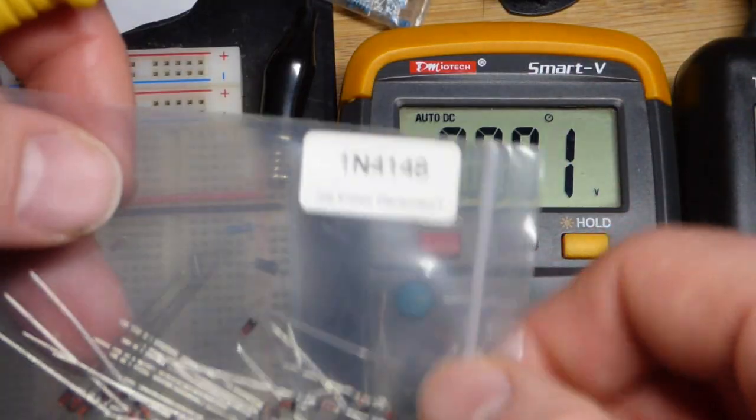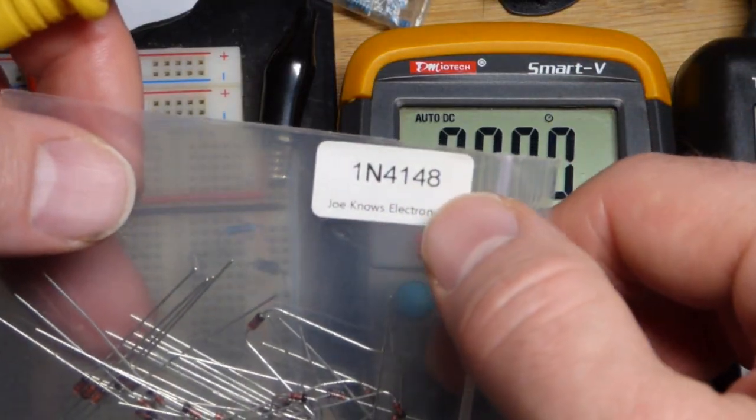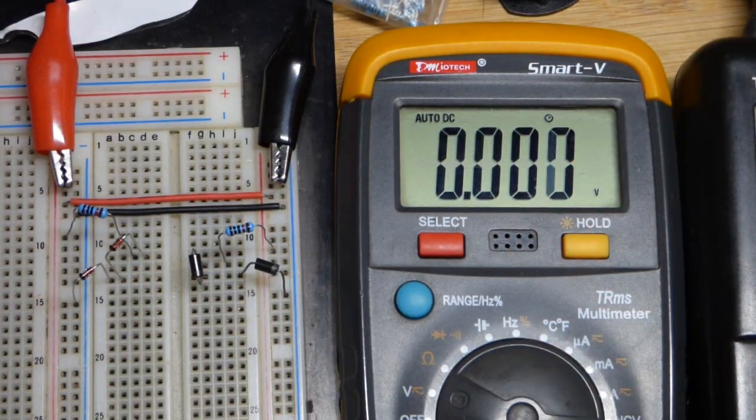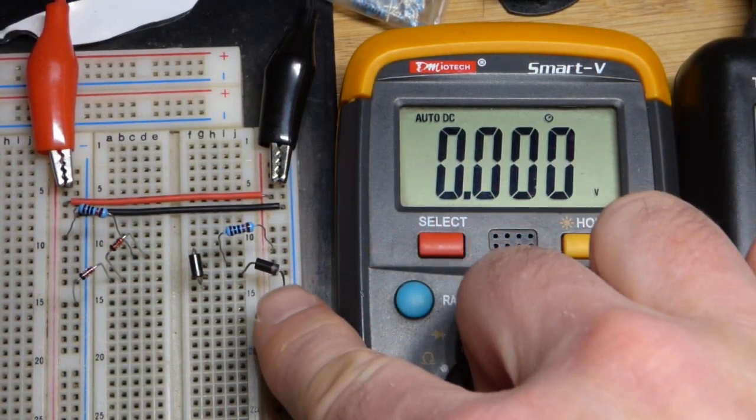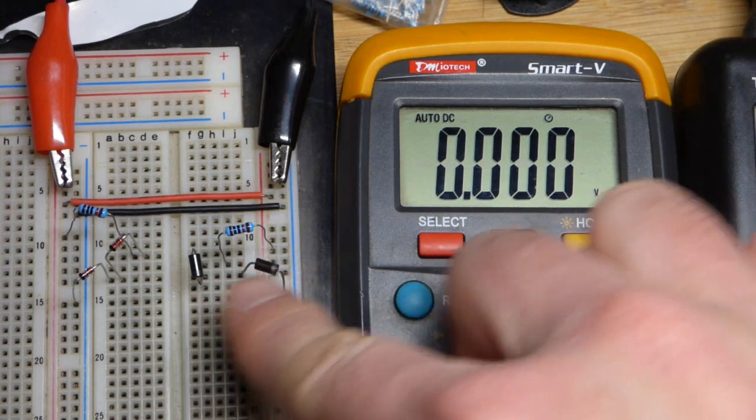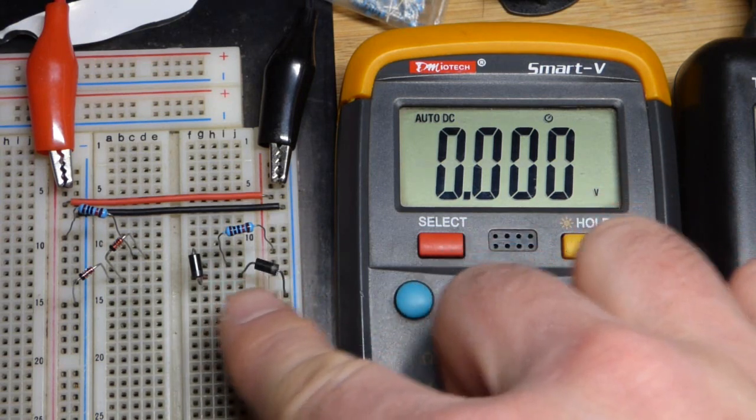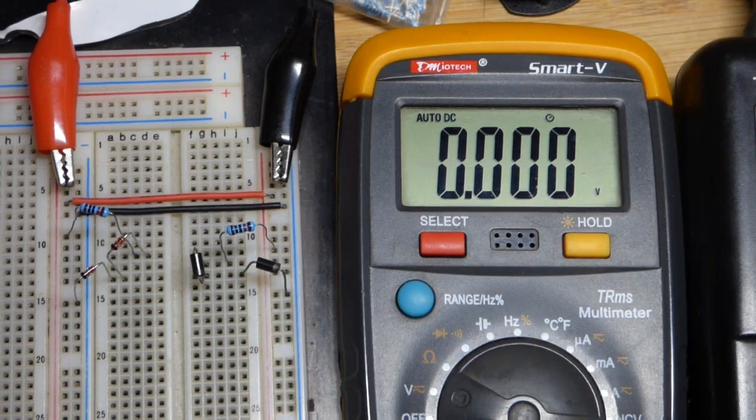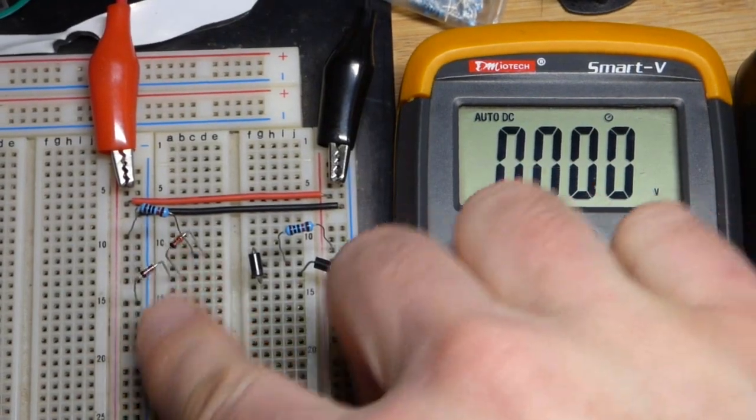The other diodes are 1N4148 and they're also rectifier diodes. The 1N4001s are really commonly available in kits and stuff. They're a little bit more for handling power.